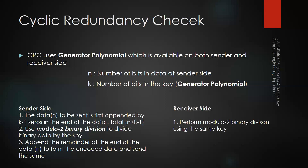The receiver will receive the data and also perform modulo-2 binary division. It already has the key, also called the binary polynomial. After performing the division using the same key, we check the value of the remainder. If the remainder is zero, it means there is no error and the data is received successfully. But if the remainder is non-zero, it means the received data has an error and the data will be dropped.